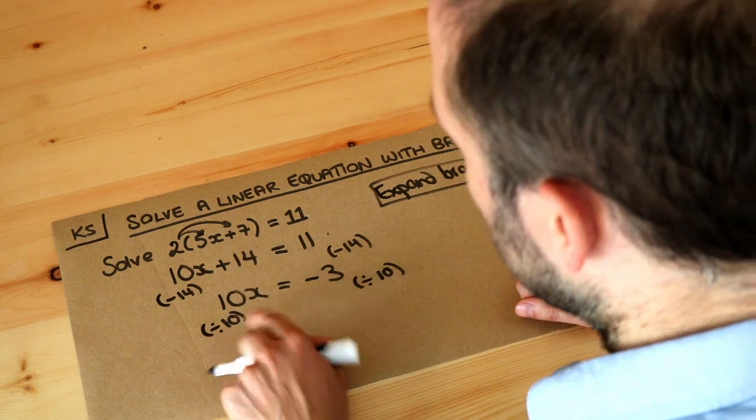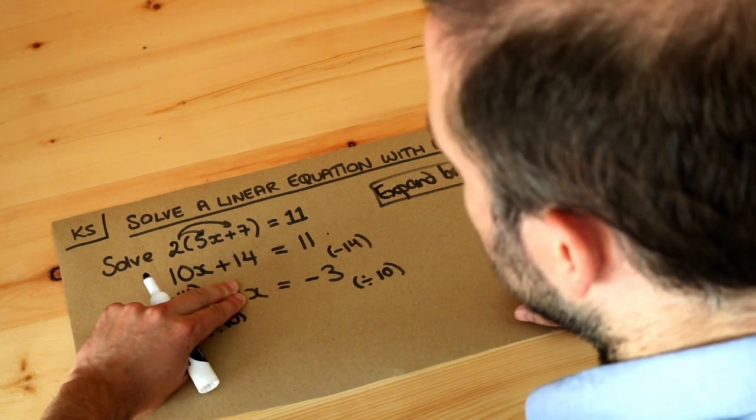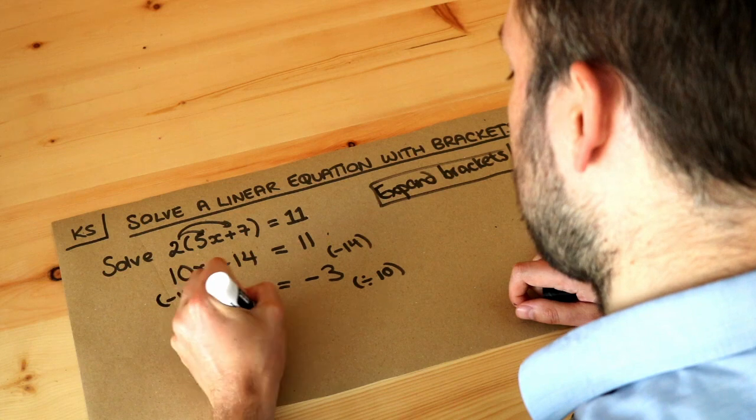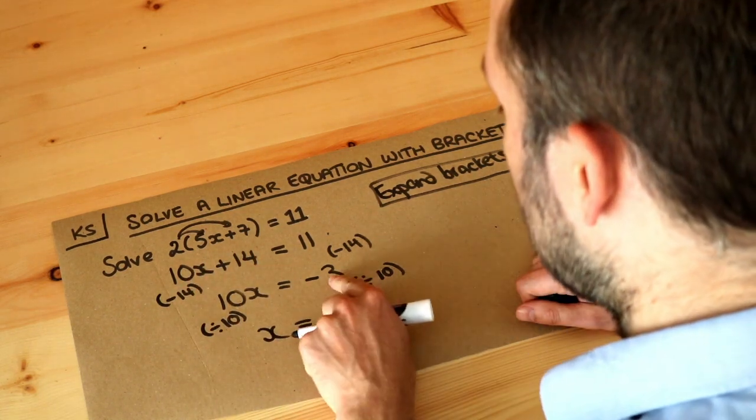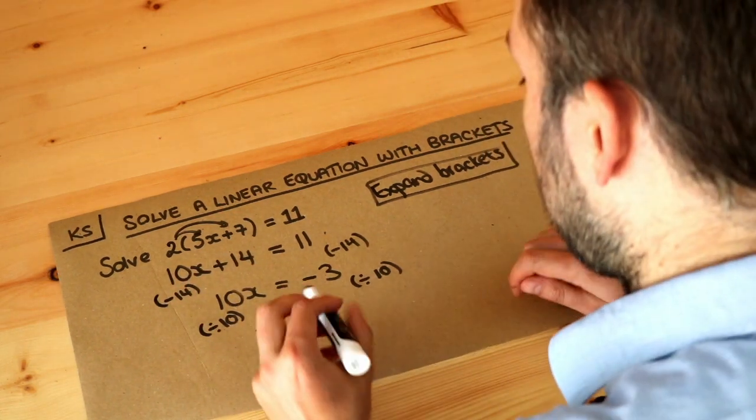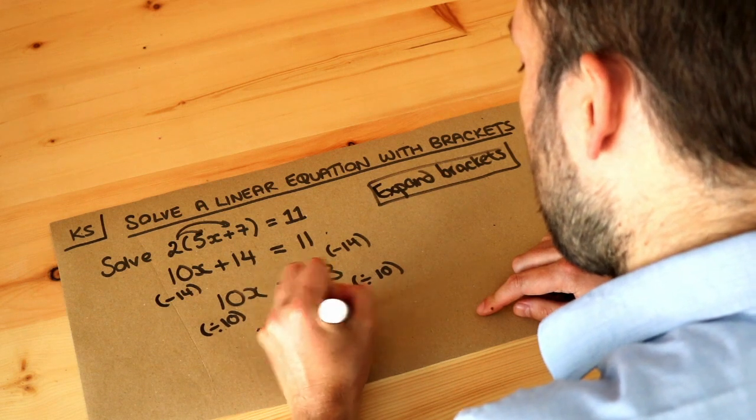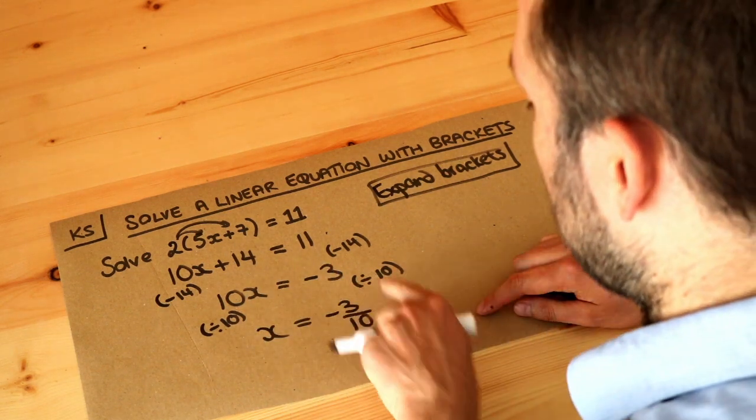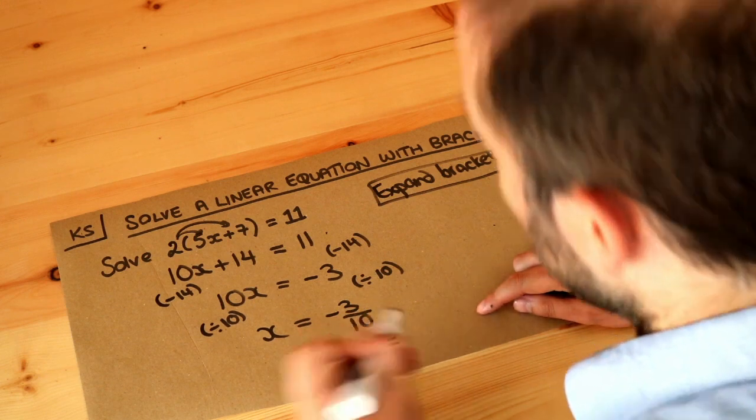10x divided by 10 gets rid of the 10, so we're just left with x. And if we divide the right-hand side by 10, we can leave it as a fraction: -3 over 10. That's the final answer.